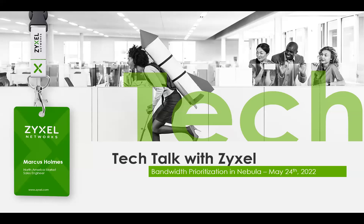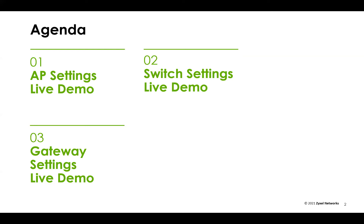Today we're going to be talking about bandwidth prioritization in Nebula — specifically bandwidth management and QoS settings. We're going to cover the three different hardware solutions in Nebula: access points, switches, and gateways, and how bandwidth management, SIP prioritization, and QoS pertain to each individual piece of hardware. Each one has its own settings for doing bandwidth management control.